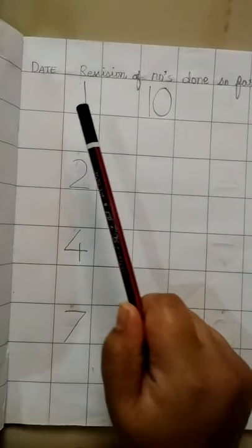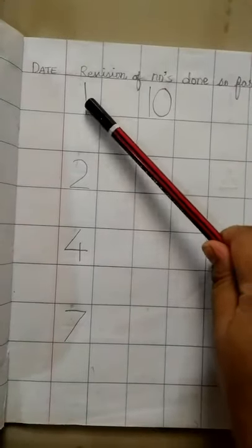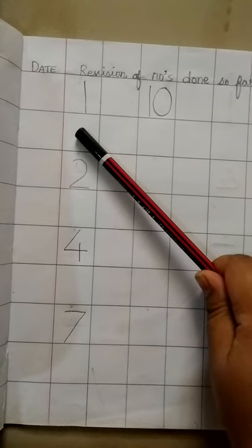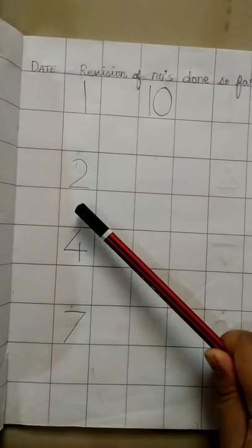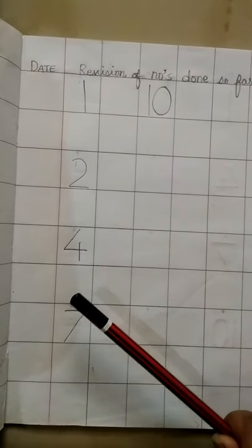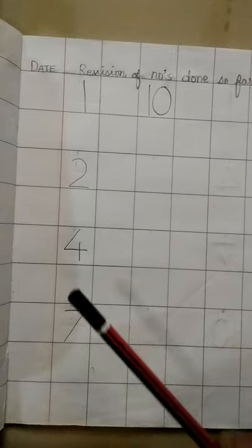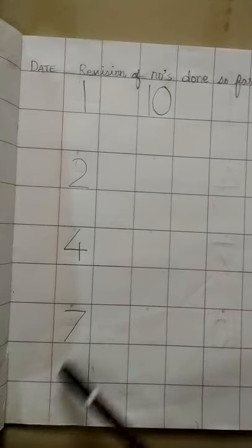And then children, you have to write number 1 on the first box. Okay? Say yes. Write 1. Say no. Don't write. Say yes. Write number 2. No. Don't write. Yes. Write number 4. No. Do not write. Yes. Write number 7.